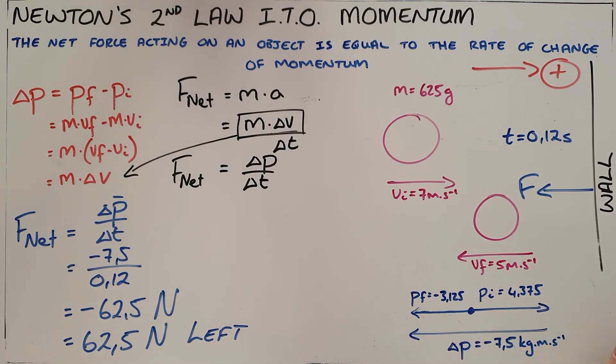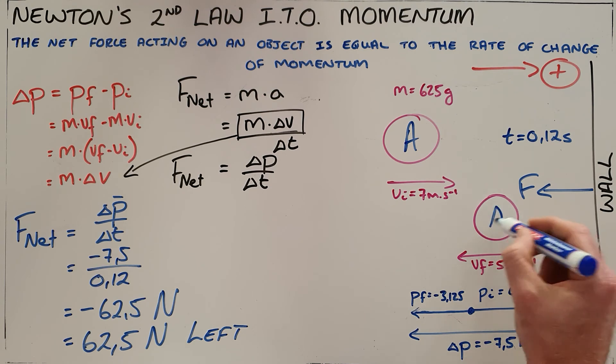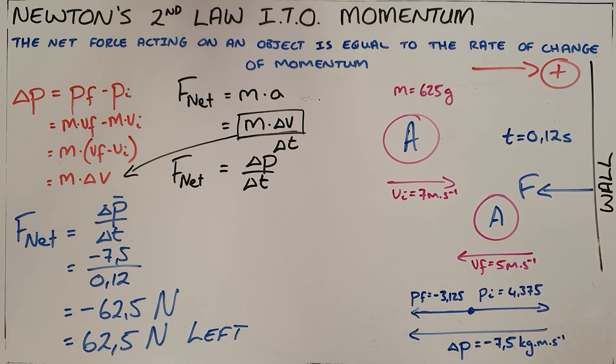because Newton's third law tells us that if object A exerts a force on object B, then object B will simultaneously exert a force of equal magnitude, but in the opposite direction, back on object A.